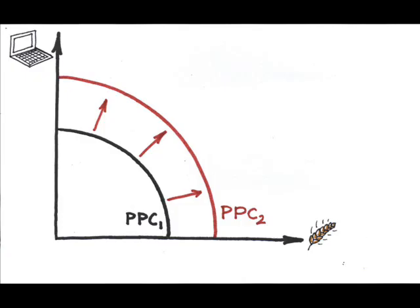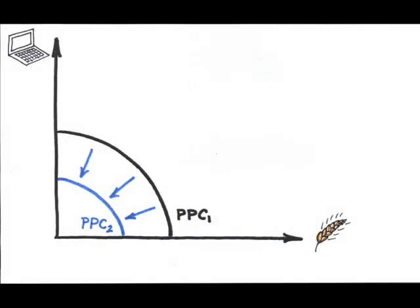Then what happens if resources decrease? Fewer resources mean less ability to produce, so the production possibilities will shrink or shift inward.